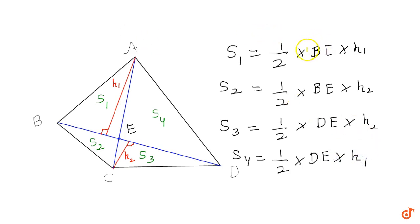Now, how do we extract a relation? I'll do pairing here - pair S1 with S3, and S2 with S4. If I multiply S1 and S3, I get one-fourth times BE times DE times h1 times h2. Similarly, multiplying S2 and S4 gives one-fourth times BE times DE times h2 times h1. Same value in both cases.